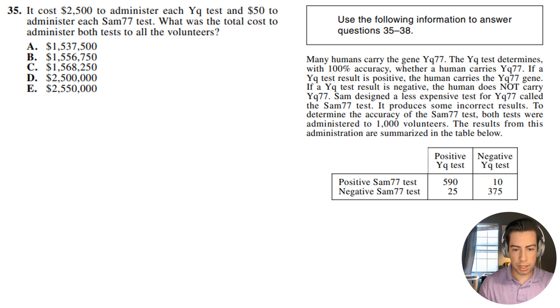So let's go ahead and read this figure here. Many humans carry the gene YQ77. The YQ test determines 100% accuracy. So guys, the YQ77 test is 100% accurate whether a human carries YQ77. If the YQ test results positive, the human carries the gene. If it's negative, it doesn't.